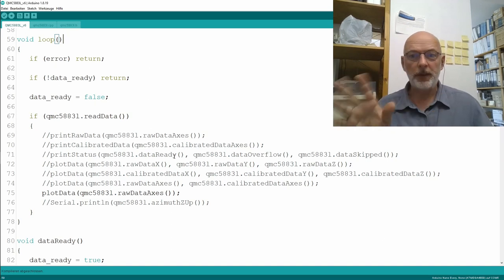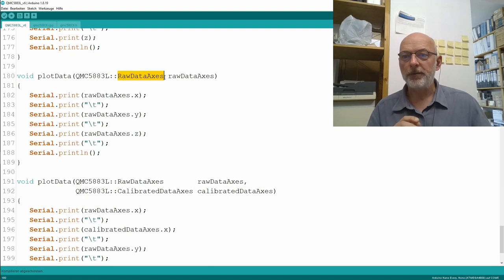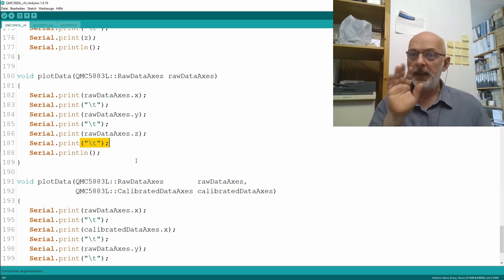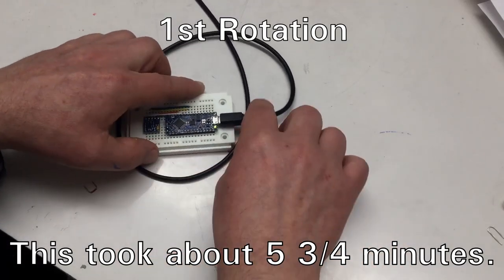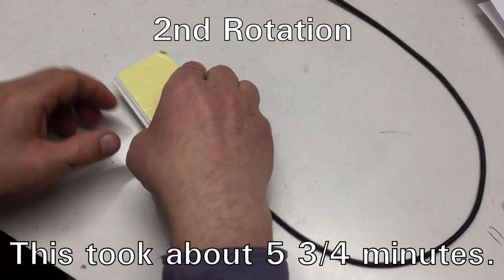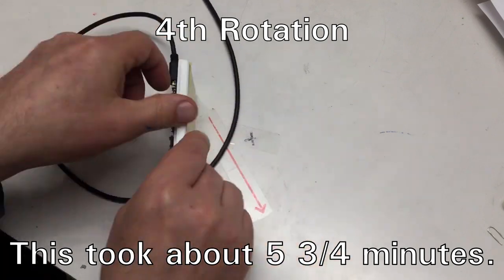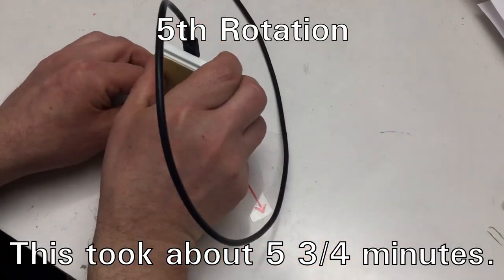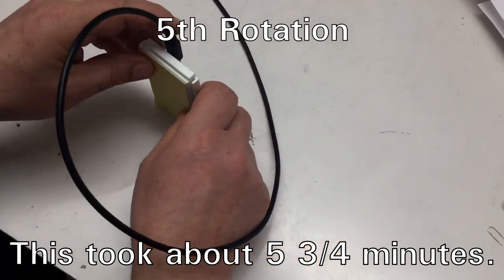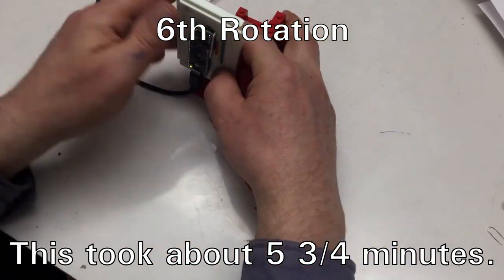I will now collect the data and I'm using version 6 of the code. The only two changes are I'm using now a plot data for the raw axis which just prints the raw data from the axis on the serial port with tabs in between, and I will capture that in the Arduino serial monitor.